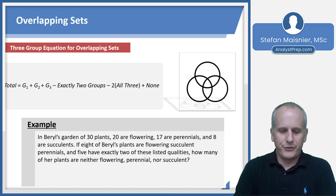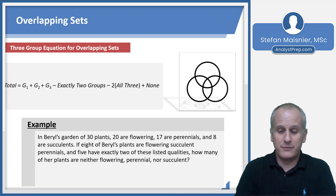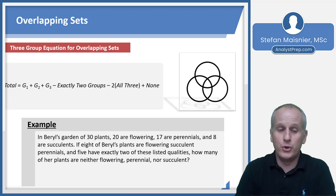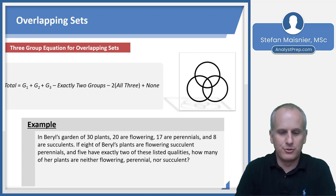We've got Beryl's garden of 30 plants: 20 of which are flowering, 17 of which are perennials, and 8 of which are succulents. We find that 8 of Beryl's plants are flowering succulent perennials, and 5 have exactly two of these listed qualities. We've got our group 1, group 2, group 3, we know there's an exactly-two-groups value, and there's an all-three-groups value.